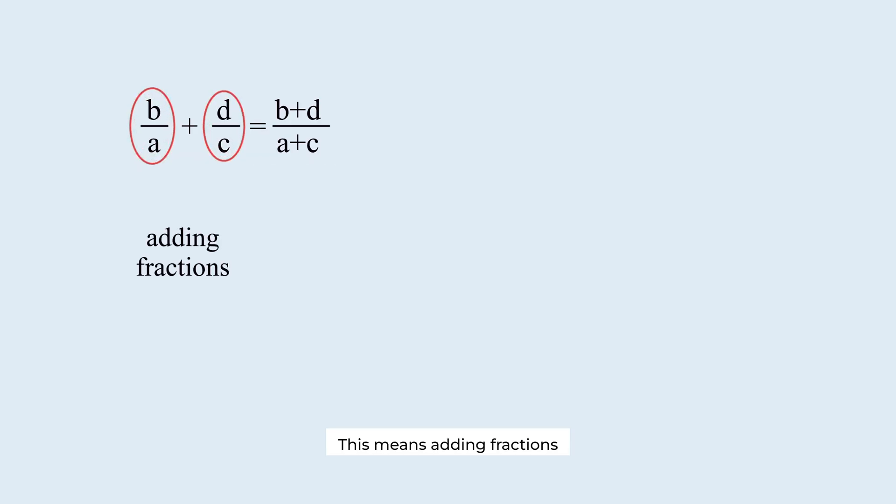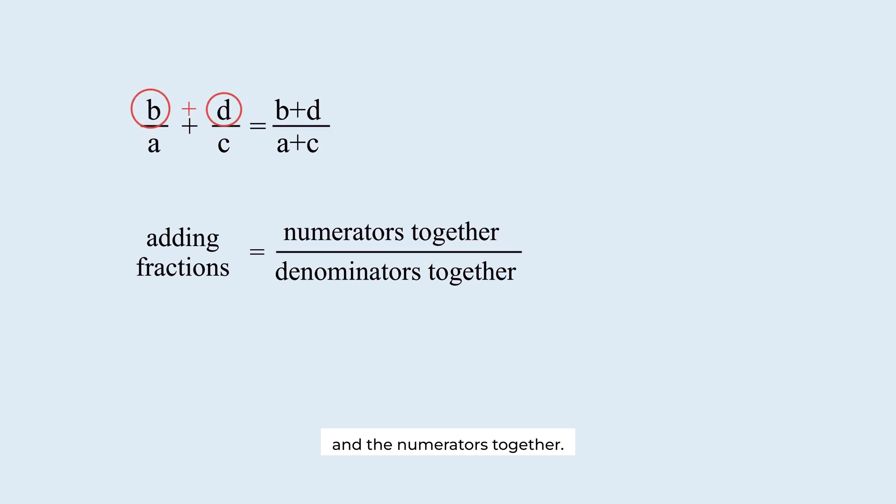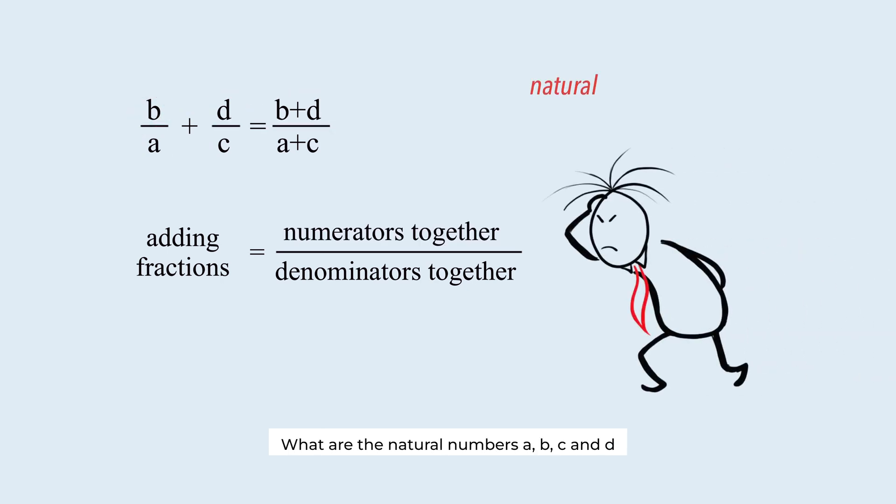This means adding fractions by adding the denominators together and the numerators together. What are the natural numbers a, b, c, and d that satisfy this equation?